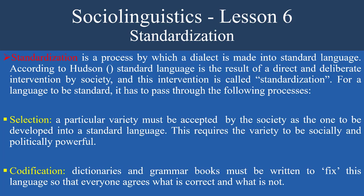Any language that becomes standard language goes through the following processes. The first is selection — a particular variety must be accepted by the society as the one to be developed into a standard language. This requires the variety to be socially and politically powerful. So the society selects it to develop it into a standard language.